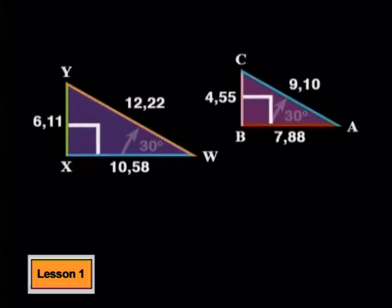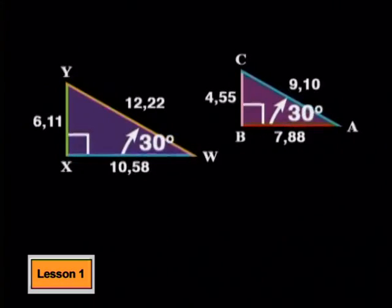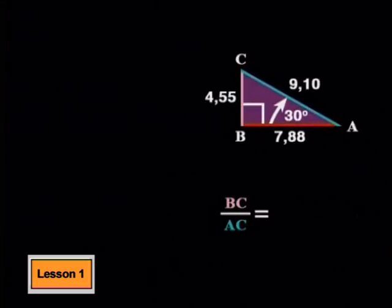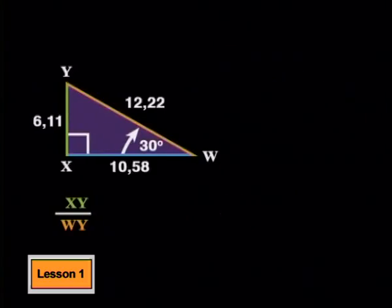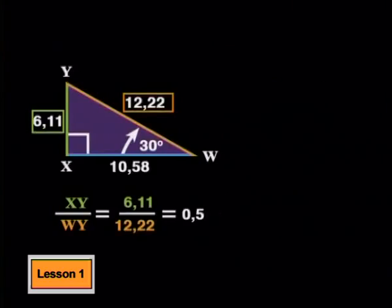They're both right angled, and they both have an angle of 30 degrees. The ratio of BC to AC in triangle ABC comes to 0.5, which is the same value as the ratio of XY divided by WY in triangle WXY.